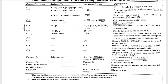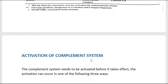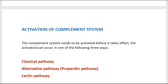C1q binds to the Fc portion of antibody and participates in phagocytosis. C1r2, a serine protease, activates C1s by cleavage, and C1s activates by cleavage of C4 and C2. These complements act in a specific order where one activates the other — this will be explained while discussing the different complement activation pathways.